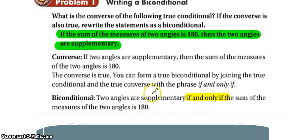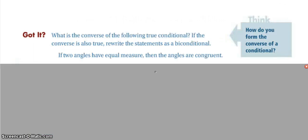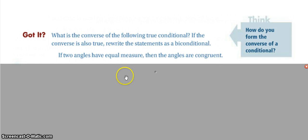There's no other way that two angles could be supplementary. For the 'got it,' the statement is: if two angles have equal measure, then the angles are congruent. Think about what the converse would be, and then how can we write that as a bi-conditional 'if and only if' statement.